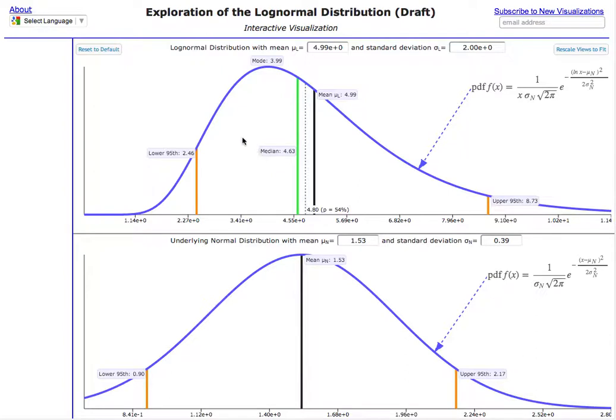So what we've got here at the top is the probability density function of a lognormal distribution. Now it's always related to a normal distribution because a lognormal distribution is basically the exponential of a normal distribution.